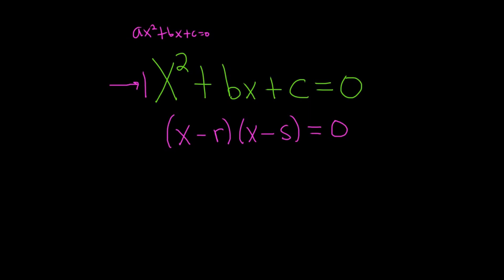Now let's go ahead and distribute this through. So x times x is x squared, and then this times this is going to be negative rx, and then we have x times negative s so it'll be negative sx, and then negative r and negative s will be plus rs.